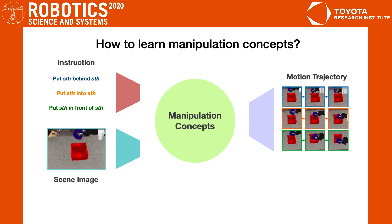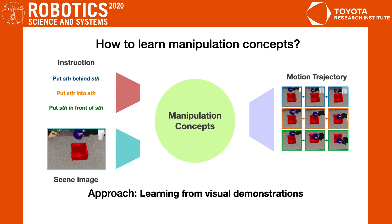How do we train our robot to output trajectories to accomplish tasks? Our approach uses learning from visual demonstrations. This allows us to avoid reward engineering, kinesthetic teaching, or teleoperation, which are time-consuming and difficult to scale up.